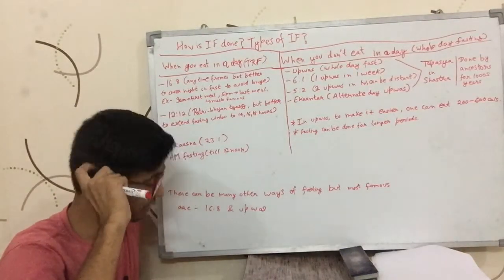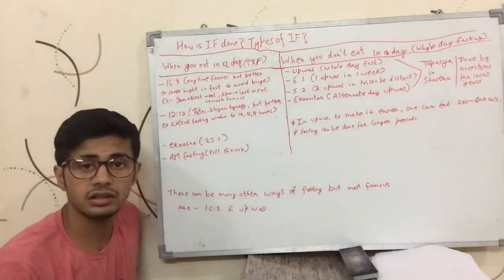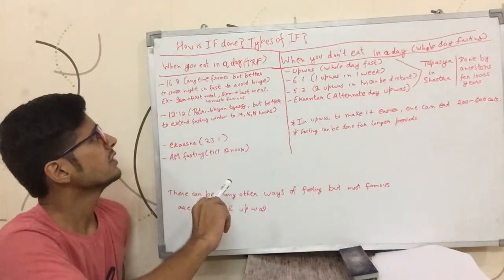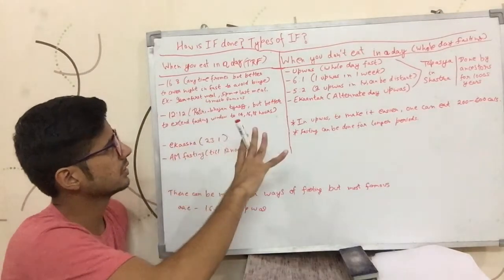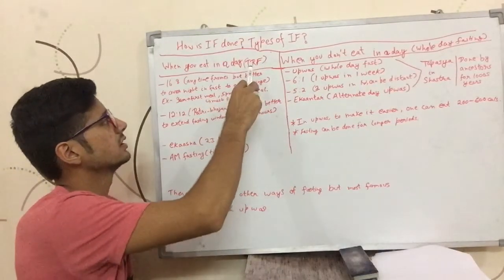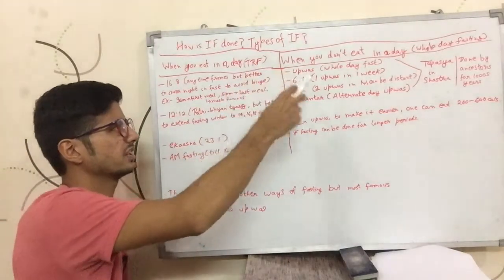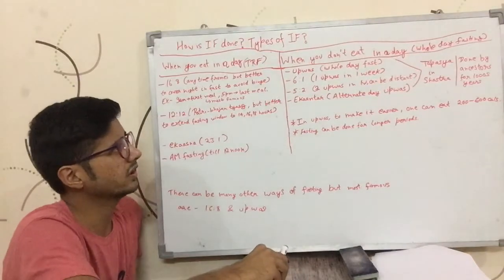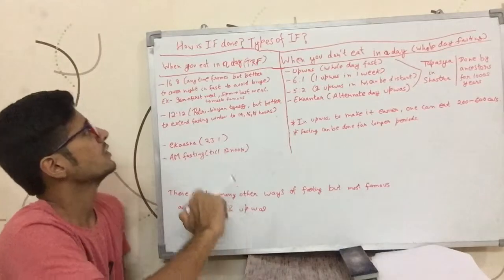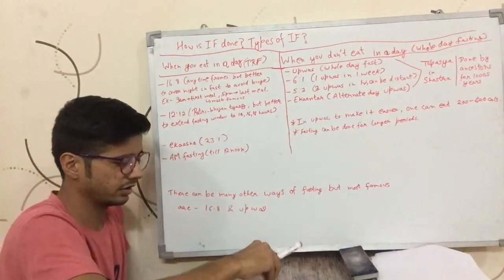Hi guys, this is Sushant Kuchar. Today we're going to talk about how intermittent fasting is done and what are the types of intermittent fasting. There can be two categories: one is where you eat some food in your whole day, which is known as time-restricted fasting, and the other is when you do not eat anything in your whole day, which is known as whole day fasting.